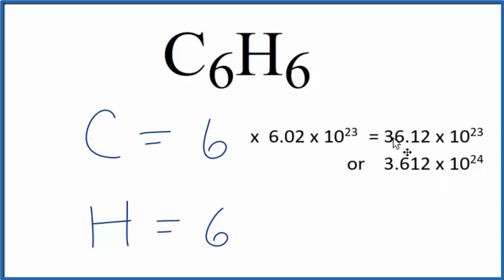Likewise, you can do the same thing for hydrogen. Six times Avogadro's number gives us the number of hydrogen atoms in one mole of C6H6.